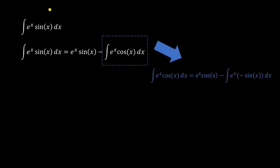Let's see what happens then. Now we're back to where we started. We have a negative sine x. This is going to bounce back and forth between sine and cosine forever. Is this even possible?